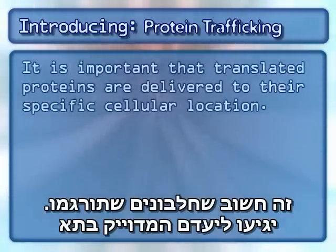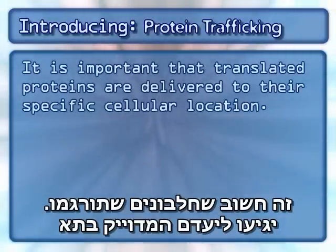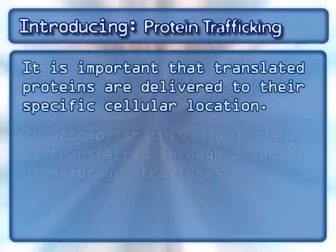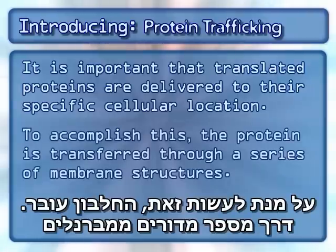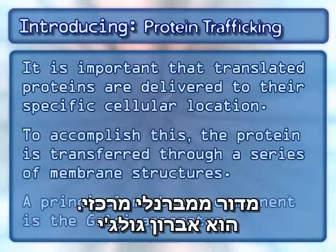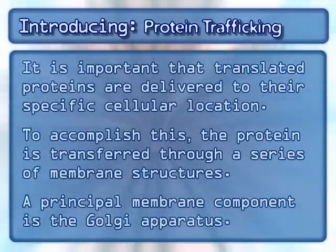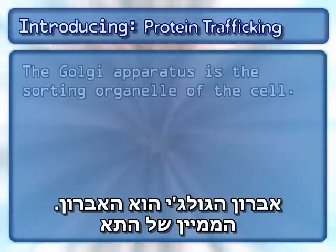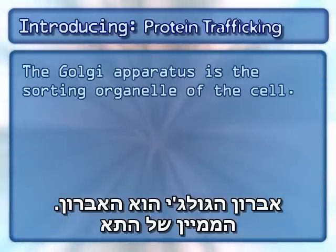It is important that translated proteins are delivered to their specific cellular location. To accomplish this, the protein is transferred through a series of membrane structures. A principal membrane component is the Golgi apparatus, which is the sorting organelle of the cell.